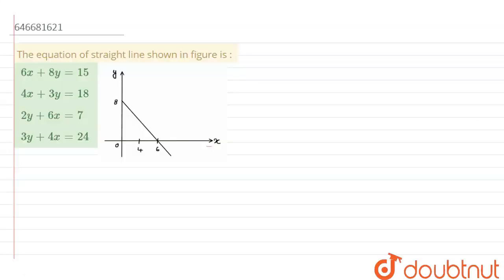Hello, the question is: the equation of straight line shown in figure is. So here we have to find the equation of this line. If we observe this line at this point, we can get a coordinate that is 0 comma 8.